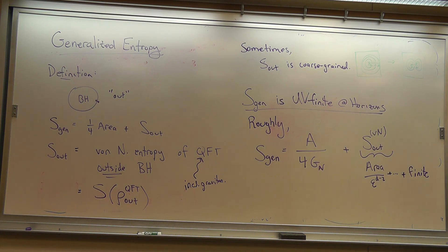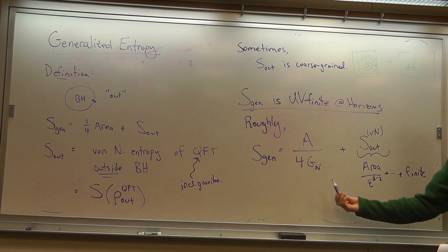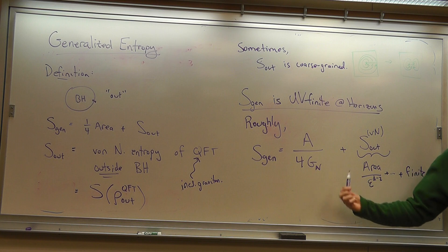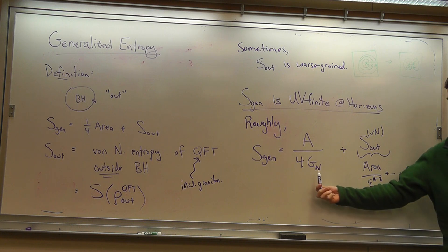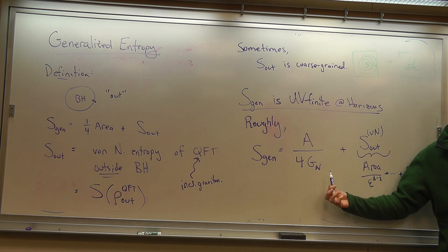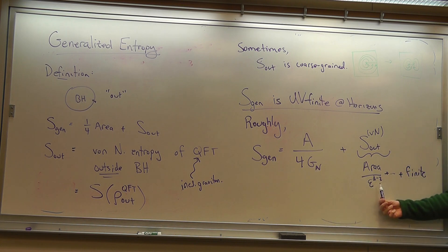So this doesn't look finite — it looks awfully infinite. But the point is that if you treat this as the bare Newton's constant, that bare Newton's constant gets renormalized by a large amount by the quantum fields. And the renormalization of Newton's constant cancels this UV divergence.